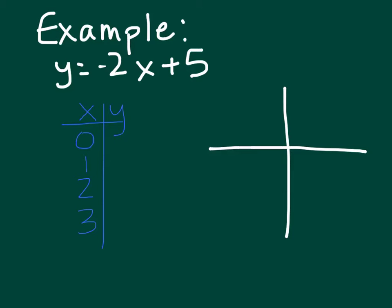We're going to plug in a 0 for x. So negative 2 times 0 is 0, and 0 plus 5 is 5. So if we plug in a 0 for x, if x equals 0, y is going to equal 5.